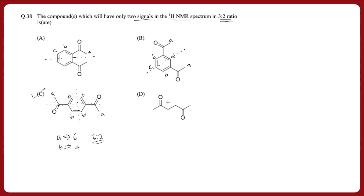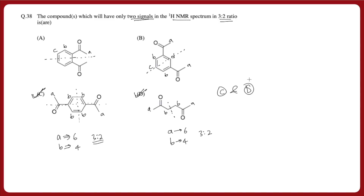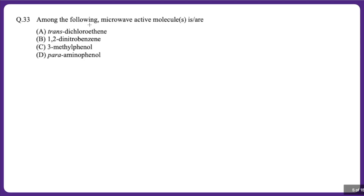For option D, there is also a plane of symmetry with proton types A and B — A type gives 6 protons and B type gives 4 protons, so the ratio is again 3:2. That makes the correct options C and D both. The compound having two signals in the proton NMR with a 3:2 ratio will be C and D.